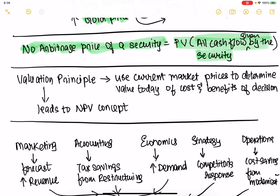If Warren Buffett thinks the future cash flow is going to be much higher, he sees a clear arbitrage and buys. There is a price at which there is no arbitrage — that is where the security ideally should trade, though it typically trades above or below it. So you need to calculate whether it is a good investment or not. We've covered the valuation principle, which says we can use the current market price today to determine the value of costs and benefits, and that helps us with NPV.